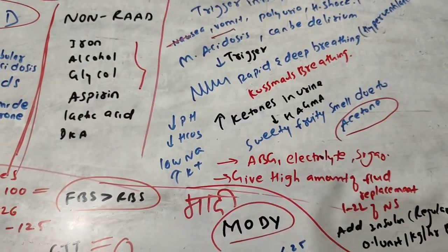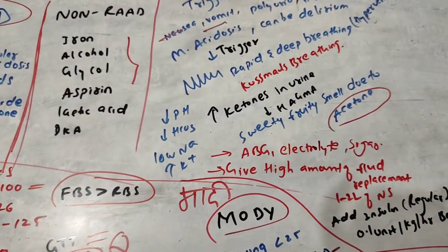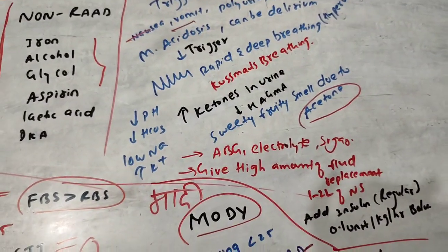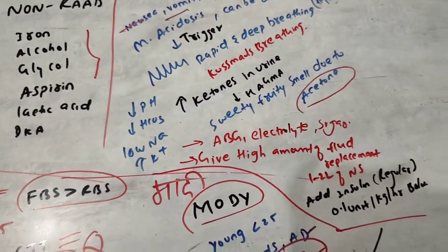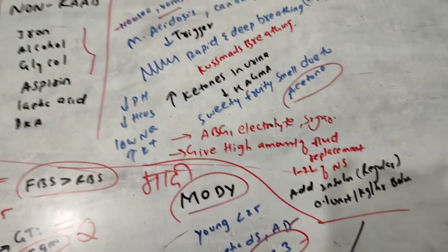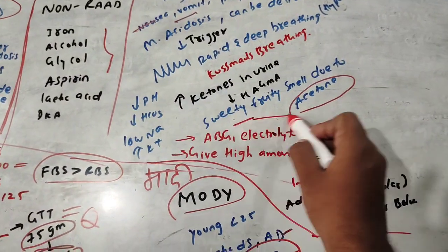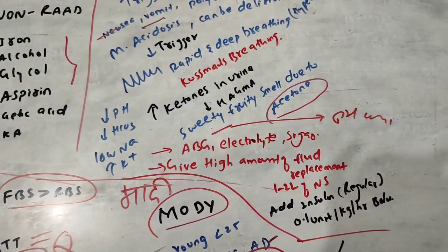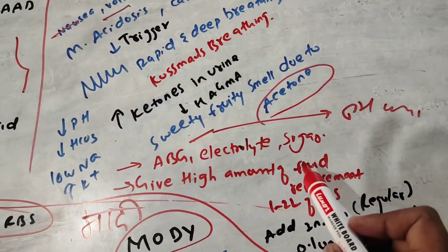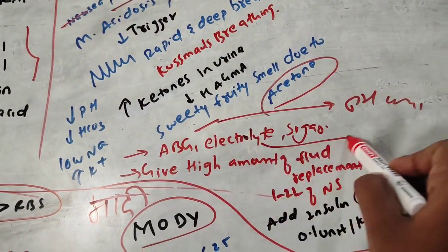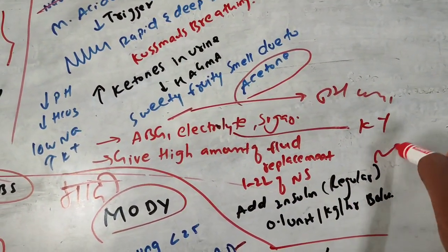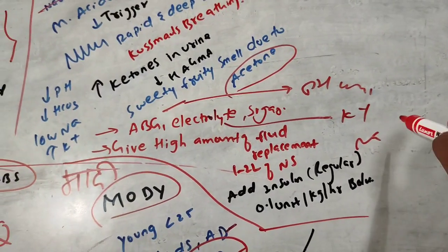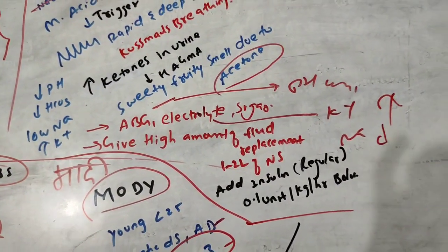DKA is a medical emergency. First, perform ABG to check pH and bicarbonates. Also check electrolytes — mainly potassium and sodium. In DKA there is typically low sodium and high potassium.